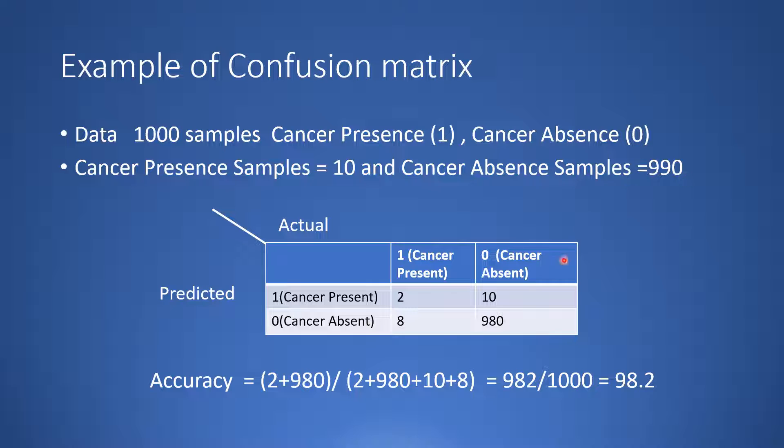And out of 990 samples where cancer is absent, it is actually predicting 980 samples as cancer is absent and 10 samples as cancer is present.